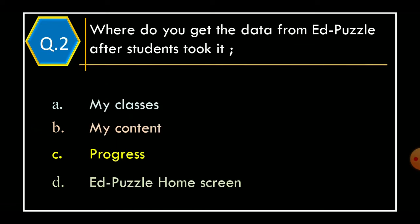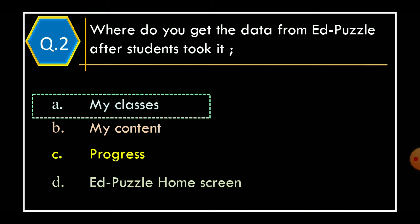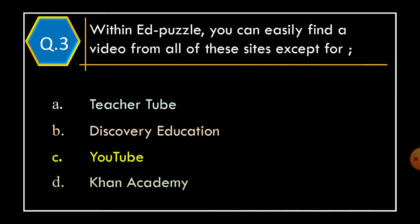Question 2: Where do you get the data from EdPuzzle after students took it? Option A: My Classes. Option B: My Content. Option C: Progress. Option D: EdPuzzle Home Screen. And the correct option is Option A: My Classes.